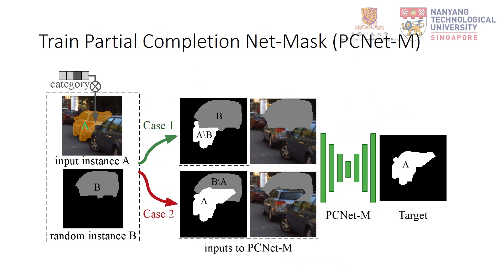Partial completion is implemented by the Partial Completion Network for masks, abbreviated as PCNet-M. Given an instance A, we randomly choose another instance B from the dataset — we only have modal masks for both A and B. For case 1, we put B above A and train PCNet-M to recover A. For case 2, we put A above B and train PCNet-M to retain A. PCNet-M is a single network whose input randomly switches between case 1 and case 2. Hence, PCNet-M must discover cues to distinguish the two cases and determine whether to partially complete A or retain A, and also recover the occluded shape correctly if it determines the situation as case 1.